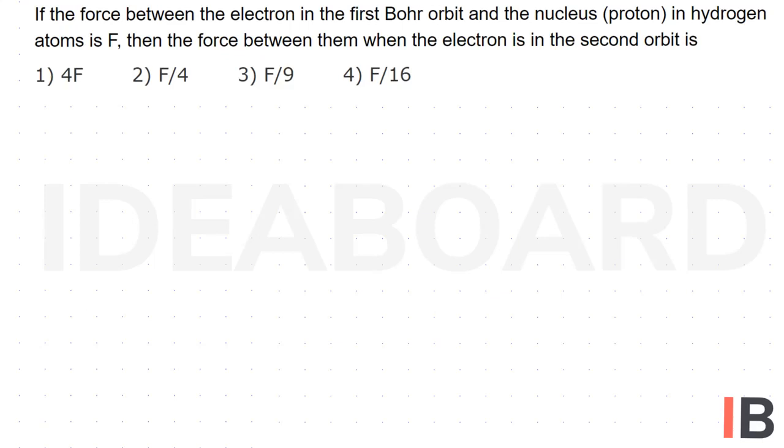Generally we know according to Coulomb's inverse square law, F is equal to k times q1 times q2 by r square, where k is equal to one by four pi epsilon not.